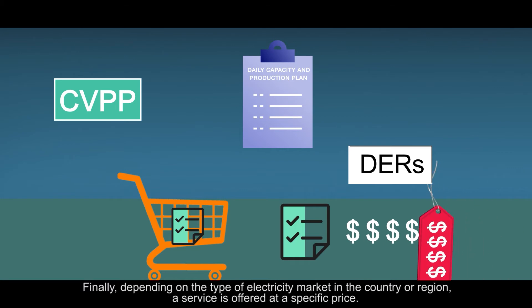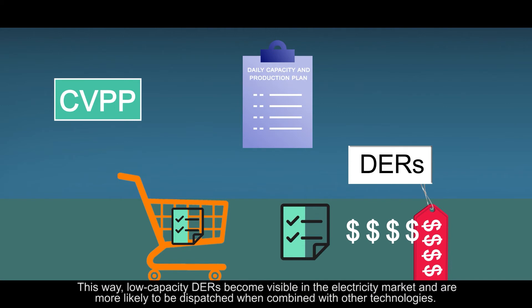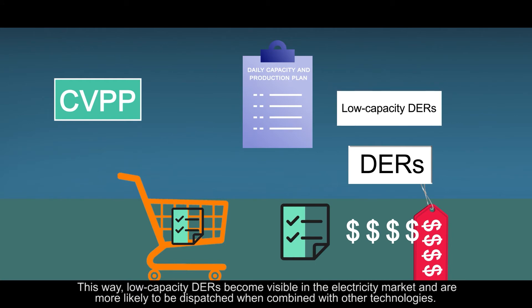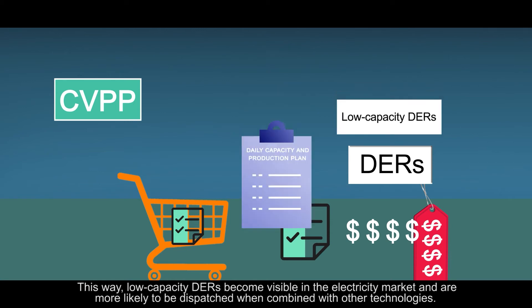Finally, depending on the type of electricity market in the country or region, a service is offered at a specific price. This way, low-capacity distributed energy resources become visible in the electricity market and are more likely to be dispatched when combined with other technologies.